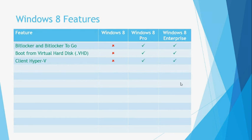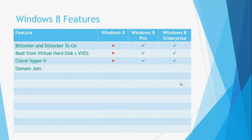The next feature is the ability to join a domain. A domain is a type of network typically used by medium and large businesses. In simple terms, a domain uses powerful computers called servers to manage and maintain the user accounts and computers on the network. The ability to participate in a domain network is only available for Windows 8 Pro and Windows 8 Enterprise editions.